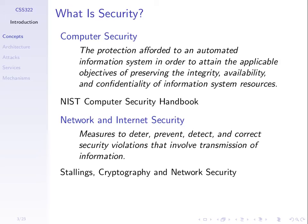What can we pick out there? We want to protect some computer system — an automated information system — and protect it to attain some objectives. From a security perspective, we'll have some objectives of what we want to achieve with that system and how we want to keep it secure. We'll arrive at talking about security policies in one of the later slides. We want to preserve, for that computer system, integrity, availability, and confidentiality of information — or information system resources, not just information resources.